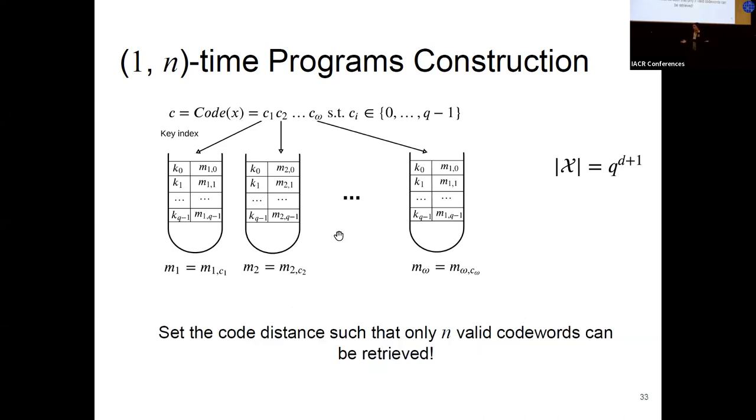Also, that wasn't easy. It wasn't just like a direct idea. In this area, we had to figure a way to configure the code distance in a way that the malicious party can get up to n valid code words, meaning that it can execute the program over only up to n different inputs. We also, we have the formal security proofs and even more details because the construction is more involved. And I will refer you to our paper to see the full details there.